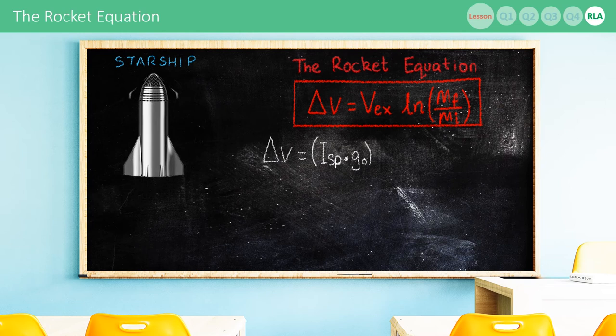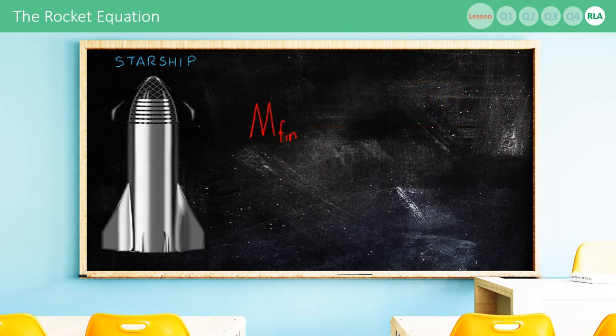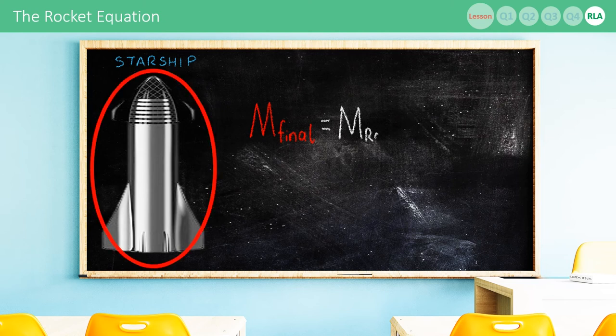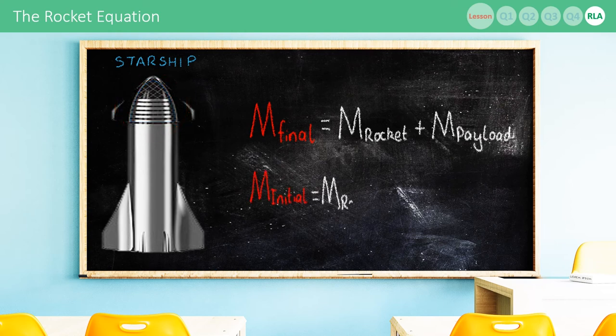ISP is basically like the miles per gallon for a car. The higher it is, the more boost that you get for a certain amount of fuel. We can also replace the final mass of the rocket with the rocket's dry mass, the mass without propellant, plus the mass of the payload, the thing that you're trying to take into space, and the initial mass is the same but also includes the mass of fuel or propellant.